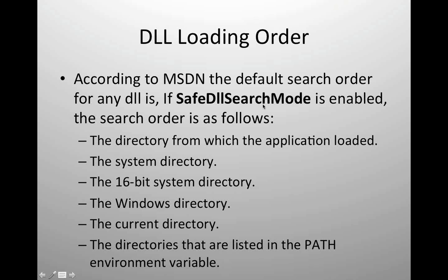If Safe DLL search mode is enabled, the order is as follows: first, the directory from which the application is loaded; second, the system directory (C:\Windows\System32); third, the 16-bit system directory; fourth, the Windows directory (C:\Windows); fifth, the current directory from which I am invoking the application; and last, the directories listed in the environment PATH variable. In this order, the OS will search for DLLs.